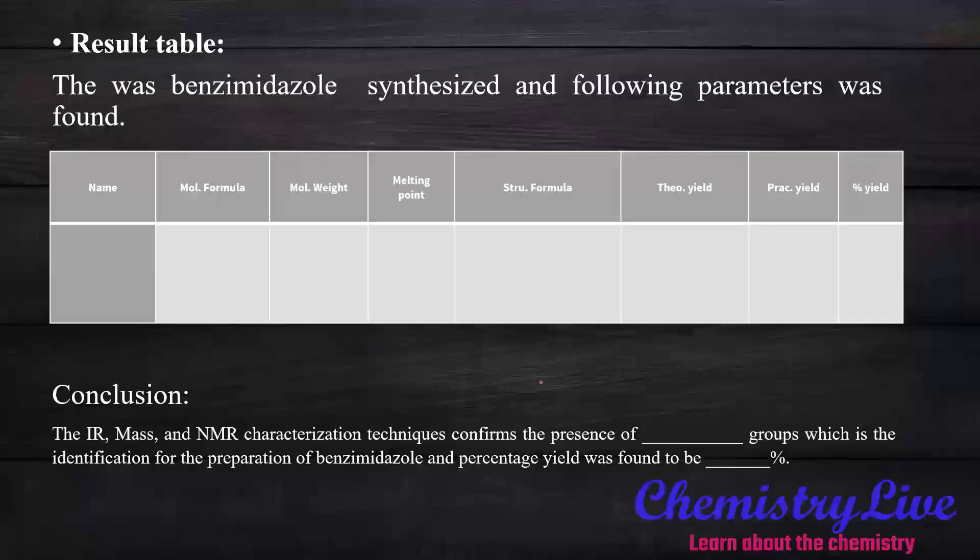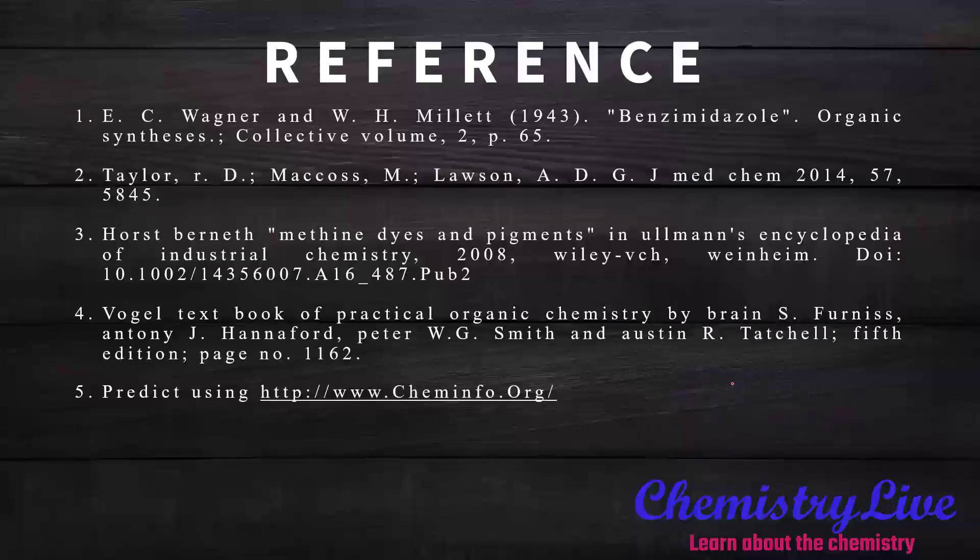In the results table, you have to write the name and percentage yield we get from practical analysis. The IR, mass, and NMR techniques show us the presence of NH and C=N or N=C groups. You have to write down the percentage yield here. These are some references I used for the information. Thank you for watching.